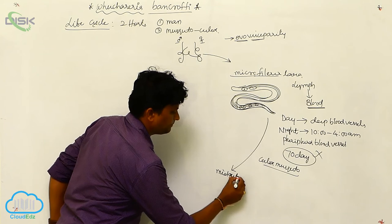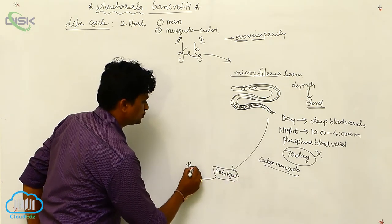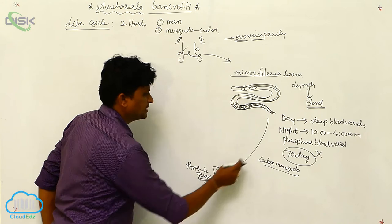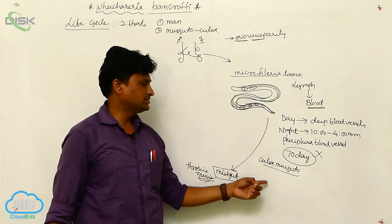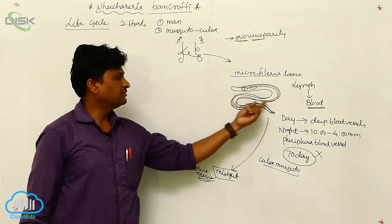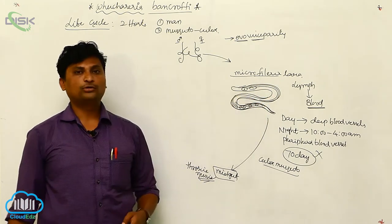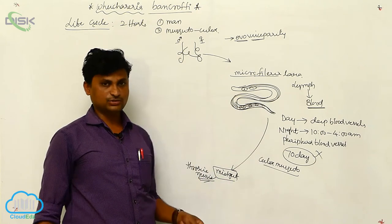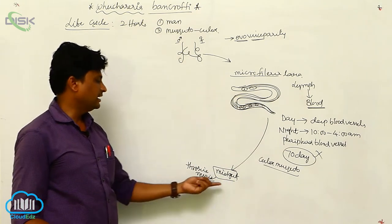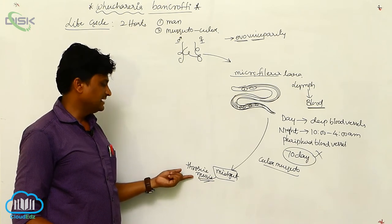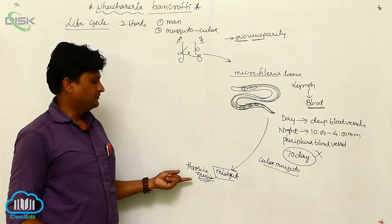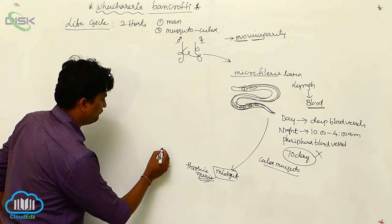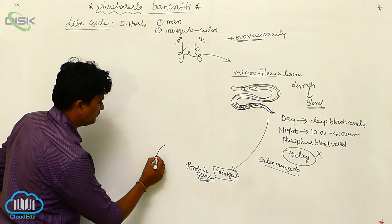From the labium, larvae finally reach the midgut. In the midgut, they proceed to the thoracic muscles. Within four to six hours in the midgut, the sheath covering the microfilaria larvae is dissolved by the digestive glands of the Culex mosquito. The larvae then migrate to the thoracic muscles.